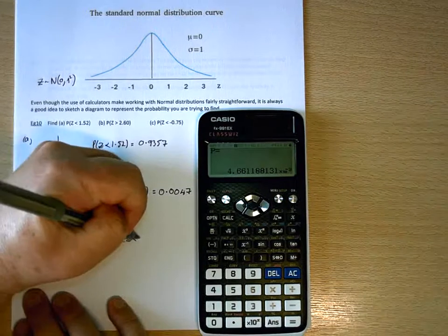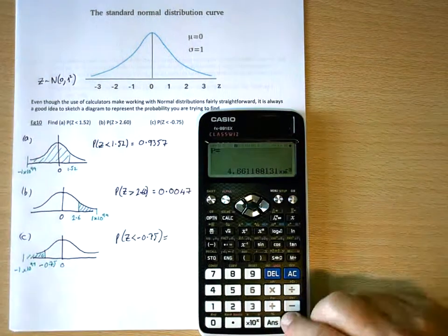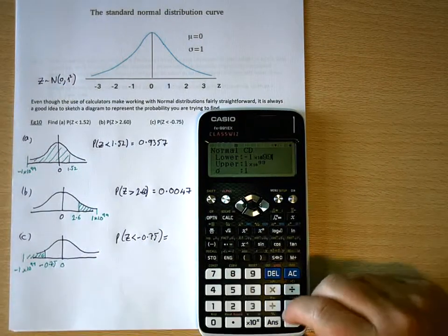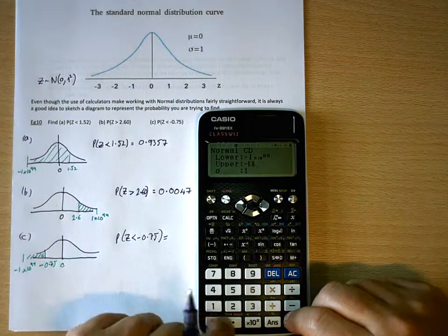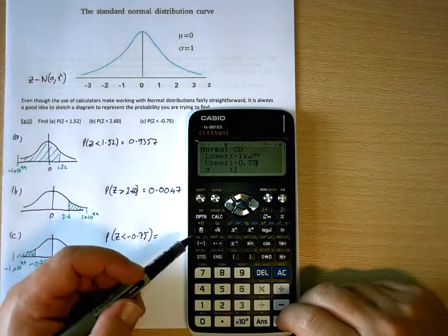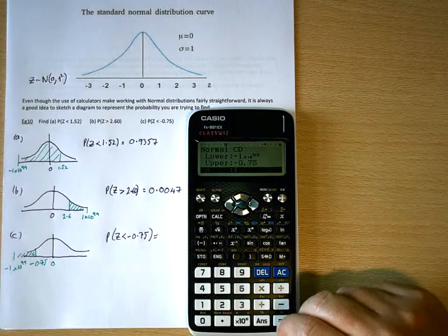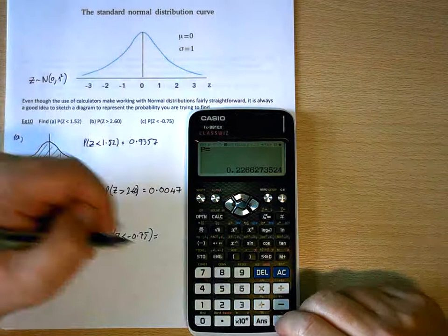So that will give me, my lower limit, negative 1 times 10 to the 99. Upper limit, negative 0.75. And I'm saying negative, because it's this button, not the subtract button, that we're using. So that's going to be 0.2266.